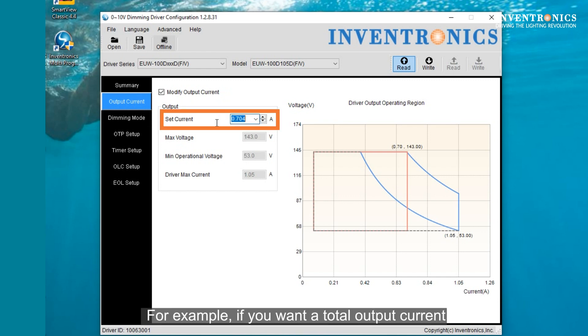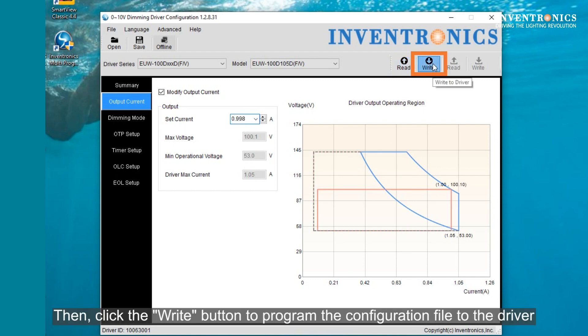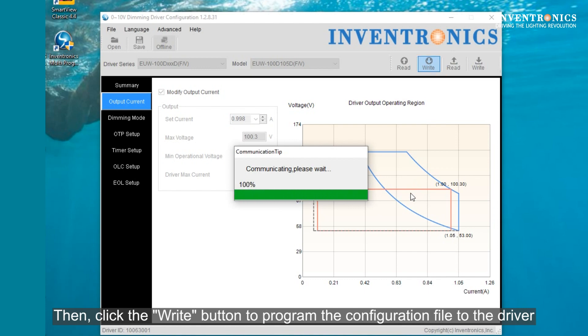For example, if you want a total output current of 1 amp for both output channels, you will set it to 1 amp. Then, click the Write button to program the configuration file to the driver.